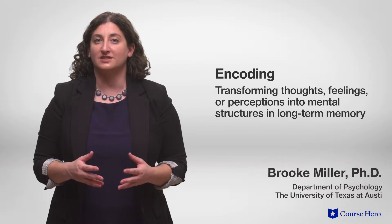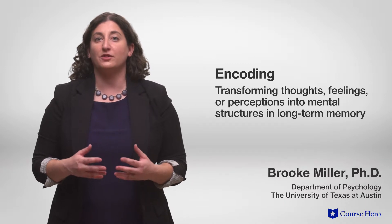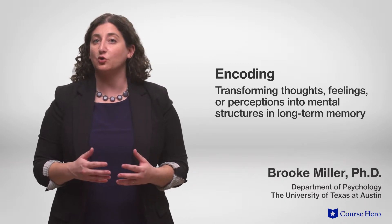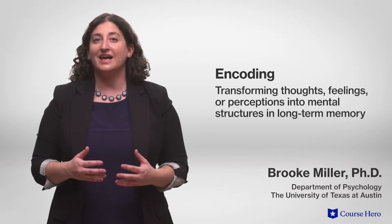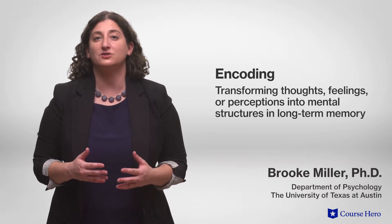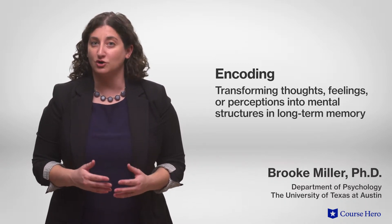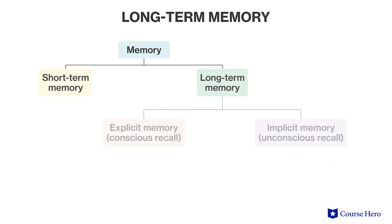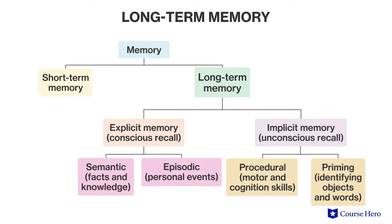Encoding refers to the process of transforming thoughts, feelings, or perceptions into enduring mental structures in long-term memory. Long-term memory is divided into two broad subtypes: explicit memory and implicit memory.